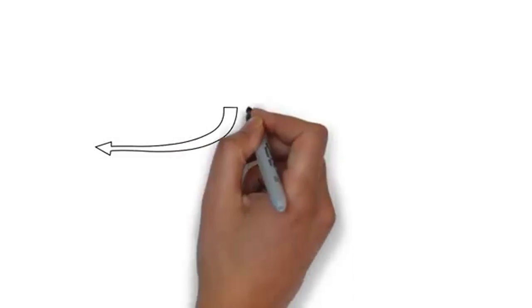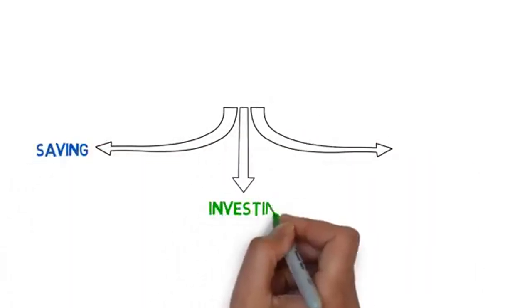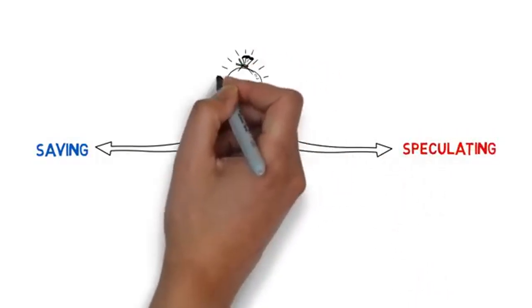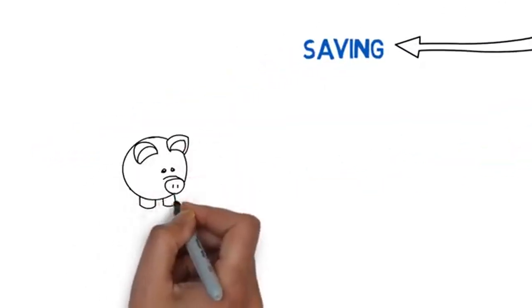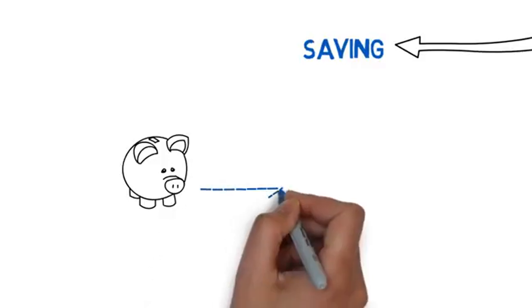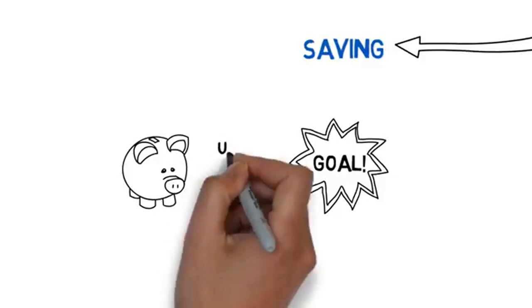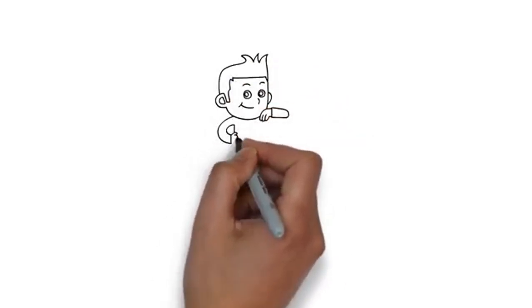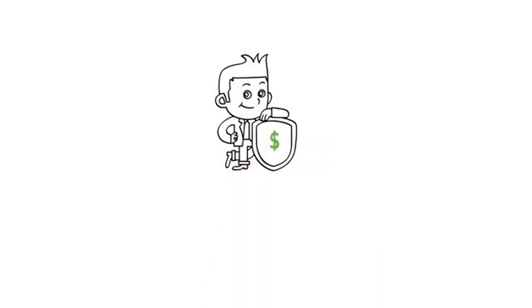Every successful investor must begin by understanding the difference between saving, investing, and speculating. If you get those confused, you run the risk of losing a lot of money. Saving can be defined as the process of setting money aside in order to make a purchase a short time in the future, typically under three years. The most important element when it comes to saving is the safety of your money. You don't want the value of your savings to fluctuate because you'll need all of it to make your purchase.